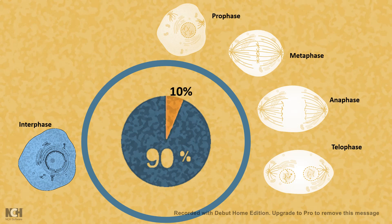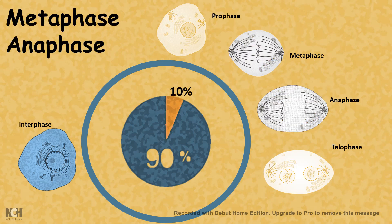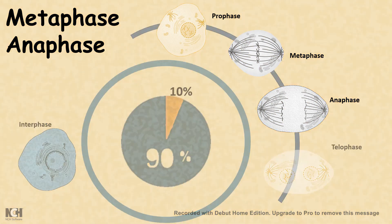Among these mitotic phases, the shortest ones are metaphase and anaphase. In this video, we'll talk about the events that are taking place in metaphase and anaphase.